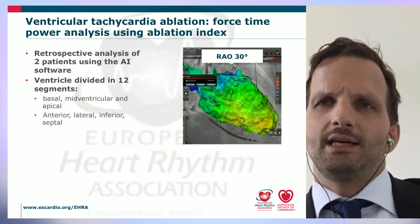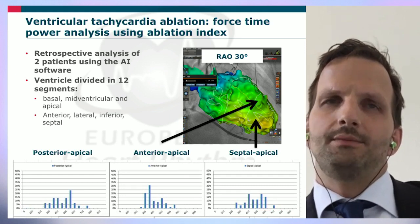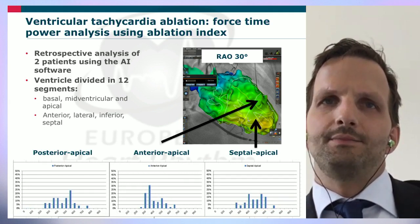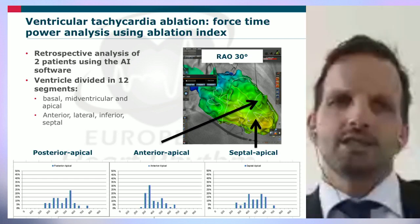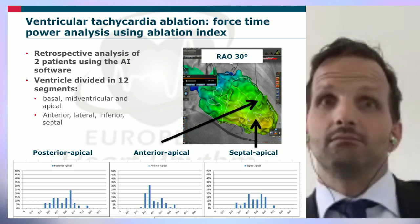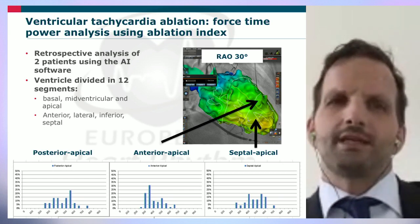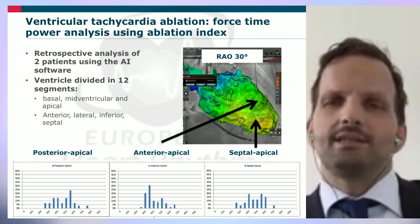In a retrospective study analyzing ablation index values in VT ablation, the ventricle was divided into 12 segments. Even within the same ventricle and region, there was very different ablation index values for different applications — very low values indicating inefficient applications and very high values potentially risking steam pop and char formation. This illustrates the importance of the ablation index in guiding appropriate energy delivery.